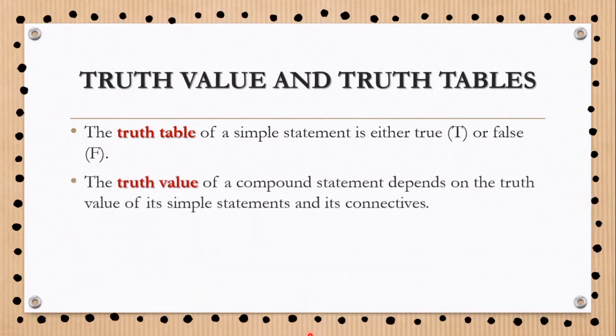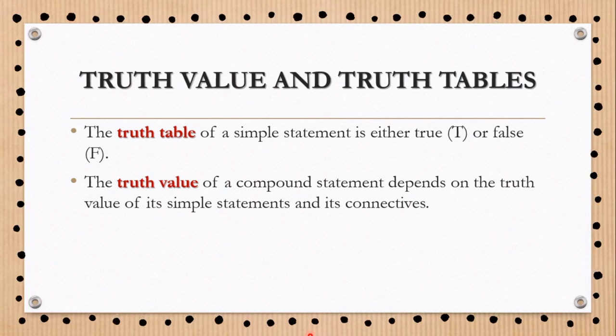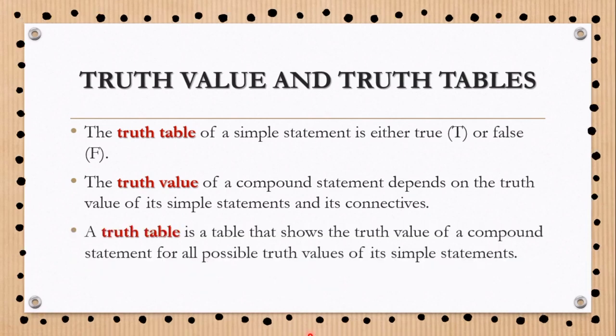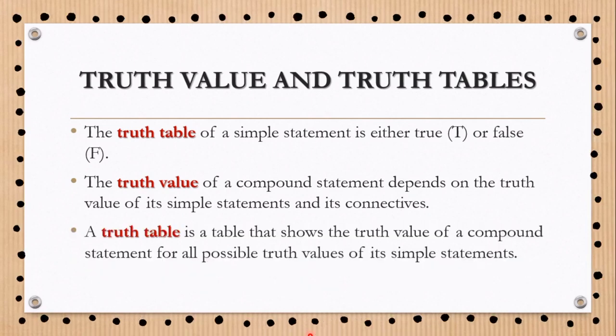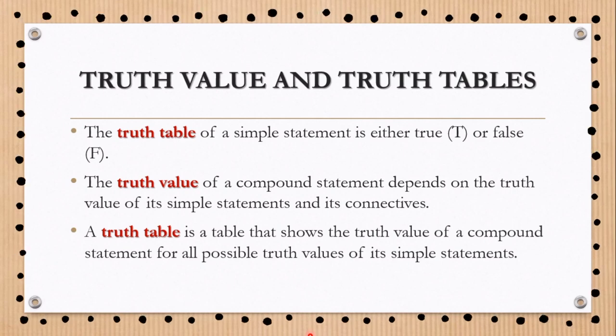The truth value of a compound statement depends on the truth value of its simple statements and its connectives. The truth table is a table that shows the truth value of a compound statement for all possible truth values of its simple statements.